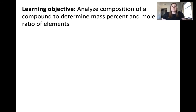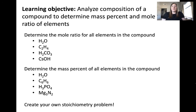The objective of this video was to give a few examples of how to analyze the composition of a compound to determine both mass percent and mole ratio of elements within that compound. Here are some practice problems you can do on your own: for the first set, determine the mole ratio for all elements in the compound; for the second set, determine the mass percent for all elements in the compound. As an extra challenge, create your own stoichiometry problem where you use either mole ratio or mass percent — or both — to find the final answer. Good luck, and I'll see you in the next video!